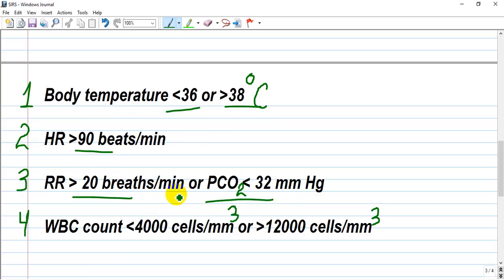What does that mean? If the patient hyperventilates, it will wash out carbon dioxide and it will be low in the bloodstream. Also, white blood cell count less than 4,000 or more than 12,000 cells per cubic millimeter.